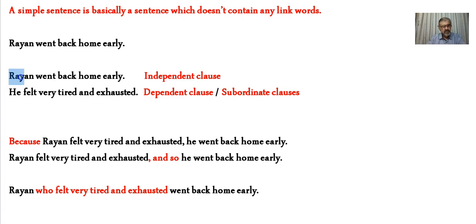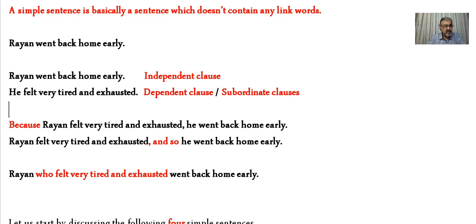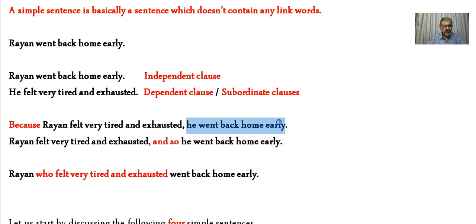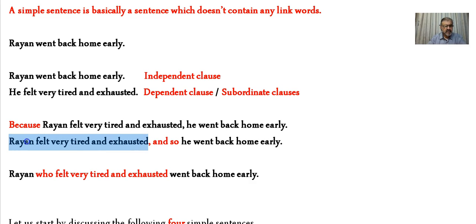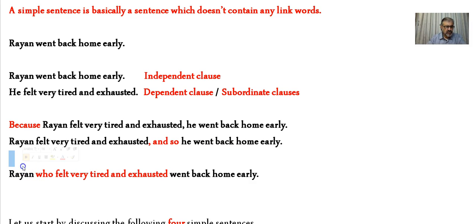How am I going to join these two sentences together? I have more than one option depending on the kind of transition word used. The first option uses a transition that refers to reason — 'because'. 'Because Ryan felt very tired and exhausted' gives the reason, and 'he went back home early' gives the result. Alternatively, I could use 'so' — which indicates the result — where the reason comes first and the result follows.